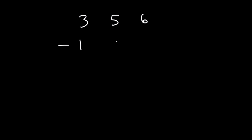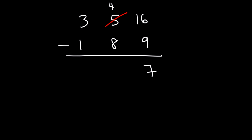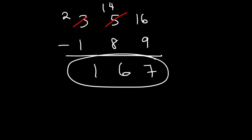You can confirm by subtracting by hand. 6 minus 9 — we can't subtract, so borrow a 1 from the 5, making it 4, and the 6 becomes 16. 16 minus 9 is 7. 4 minus 8 requires another borrow — making that digit 2 and the 4 becomes 14. 14 minus 8 is 6. 2 minus 1 is 1. So we get 167, confirming our answer.